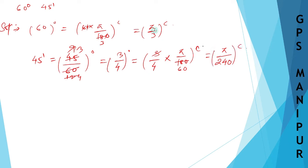Therefore, 60 degrees and 45 minutes is equal to π/3 plus π/240. Taking the LCM, the LCM will be 240, so it will be 80π plus π.